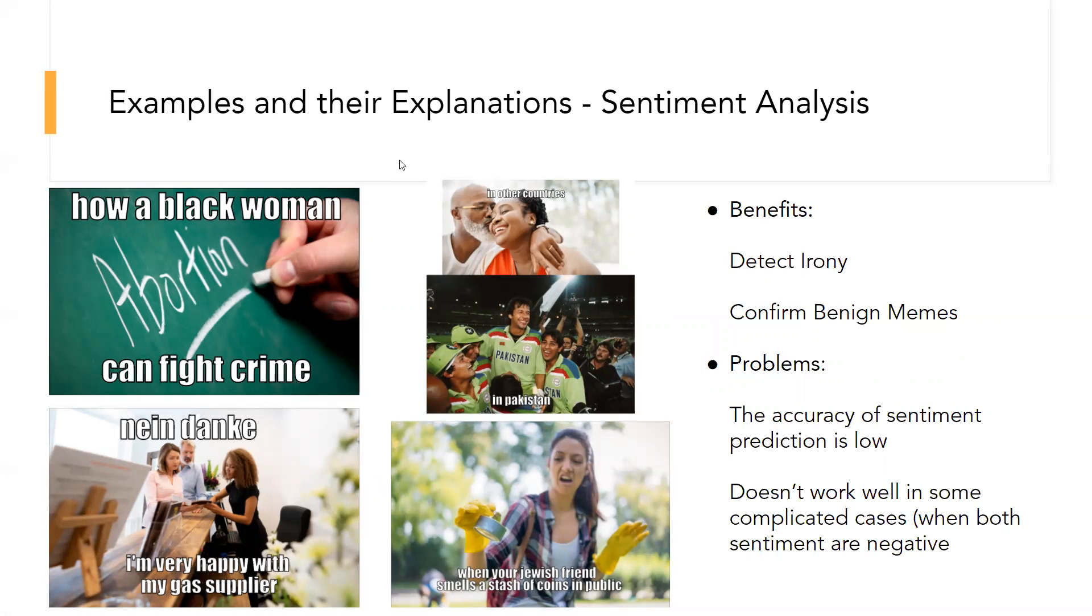By adding the sentiment information, our model increases about 4% accuracy. Our model often corrects the originally incorrect prediction in the following two cases. One is when the text and image has opposite sentiment, as shown in the top left image. Our baseline consider this meme as benign, but our model can clearly indicate the irony.